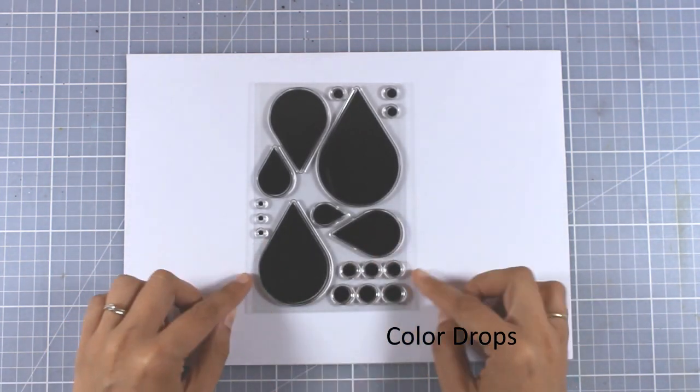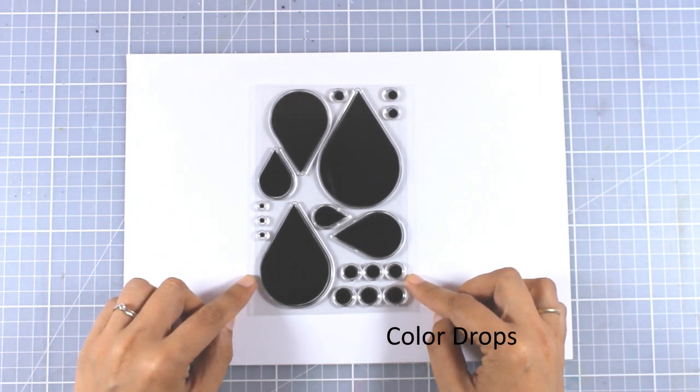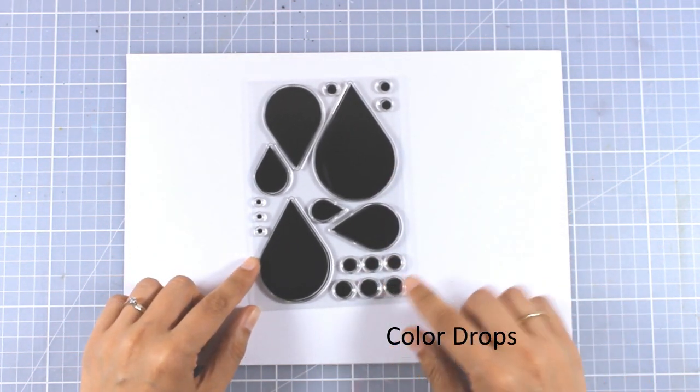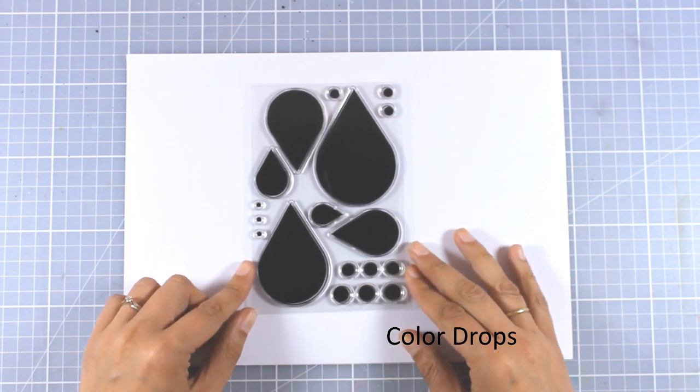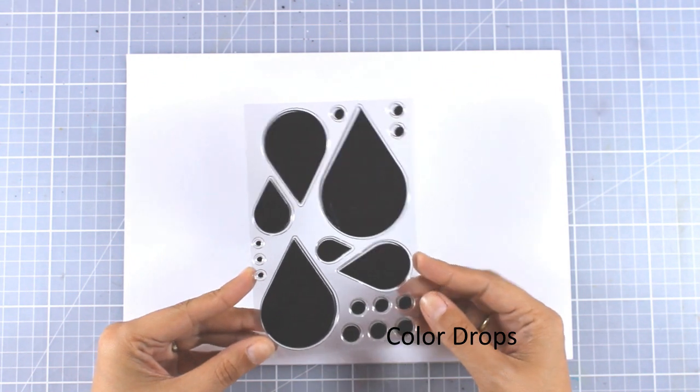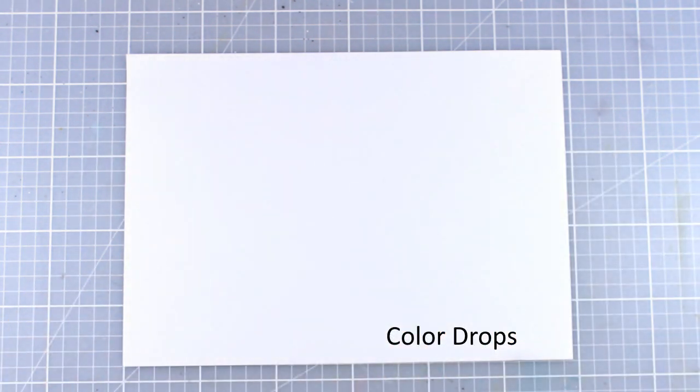Here is the last stamp set of 4x6 from this release, called Color Drops. It comes with all those teardrop shapes and circles that you can use for creating your backgrounds. I can really see a flower made out of these, and there are also matching dies. I'm going to bring them in later on.